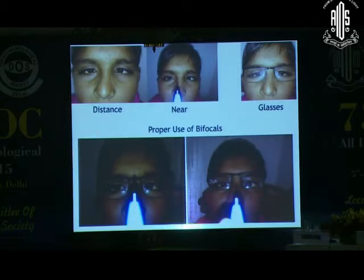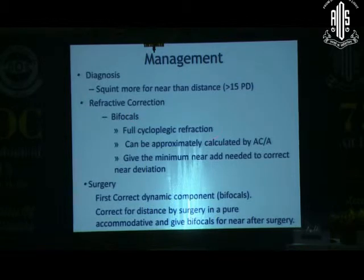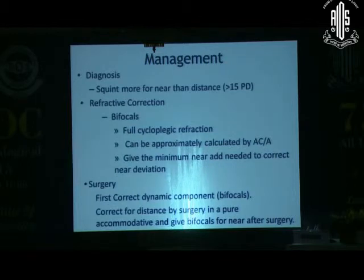It is very important to always measure the distance deviation and the near deviation, with glasses and without glasses — all these diagnoses come from that. You must do a good cycloplegic refraction before arriving at the diagnosis. If surgery needs to be done, it has to be done for the non-dynamic or static portion of the esotropia that remains after giving the full optical correction, including the bifocal correction. We would operate for the distance primary position, correct obliques if there's overaction, and for near they would continue using bifocal glasses.